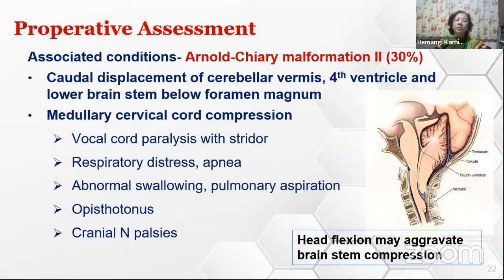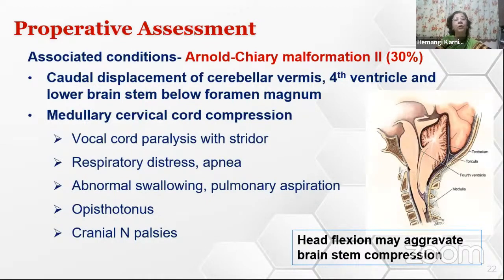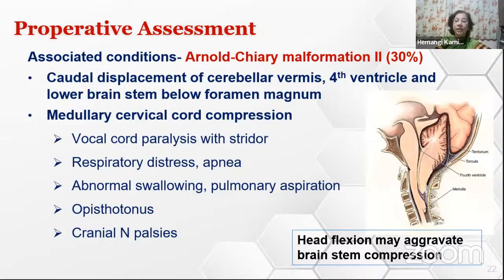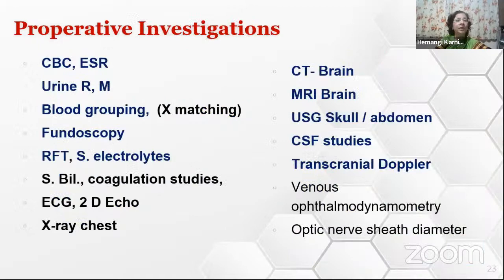Regarding Arnold-Chiari malformation type 2: it occurs due to caudal displacement of the cerebellar vermis, fourth ventricle, and lower brainstem going below the foramen magnum, leading to medullary-cord compression. This may lead to lower cranial nerve palsies, vocal cord paralysis, respiratory distress, and abnormal swallowing leading to pulmonary aspiration. Any head flexion may aggravate brainstem compression, so one must avoid neck flexion and be extremely careful in all positioning.